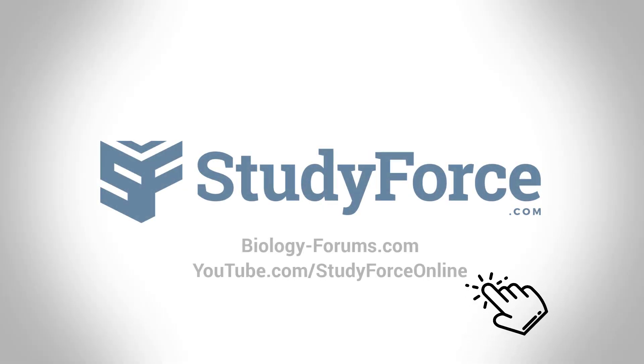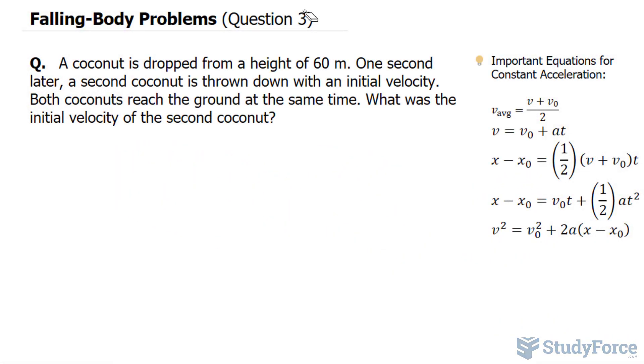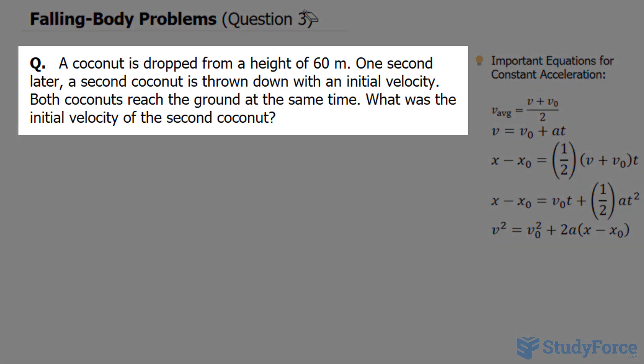Welcome back everyone to example three of our falling body problems that you typically see in a physics classroom. This time the question reads, a coconut is dropped from a height of 60 meters. One second later, a second coconut is thrown down with an initial velocity. Both coconuts reach the ground at the same time. What was the initial velocity of the second coconut?